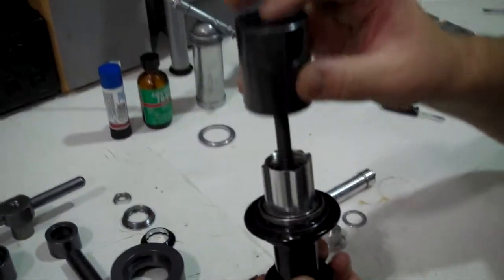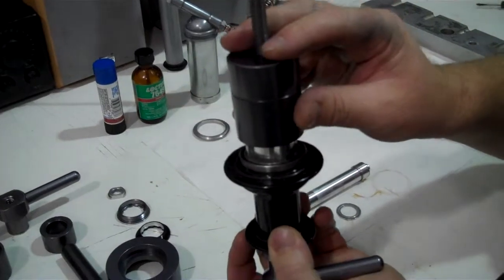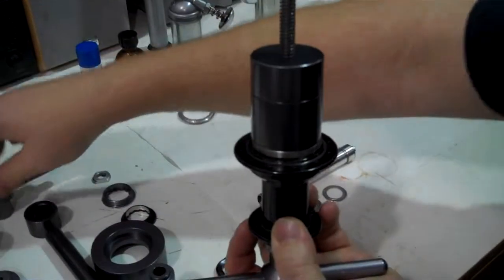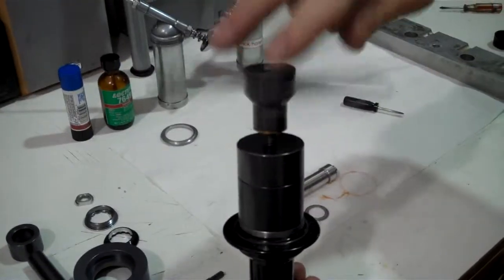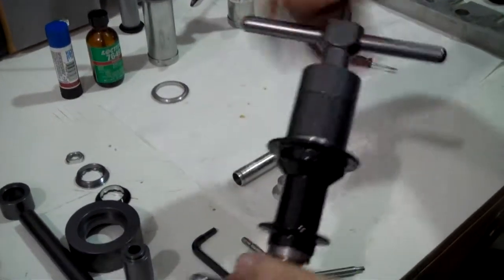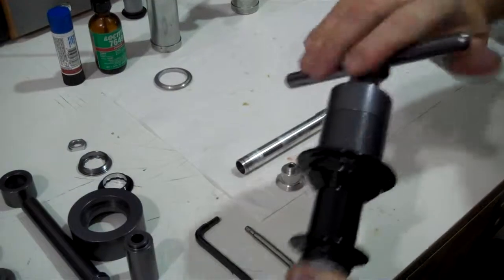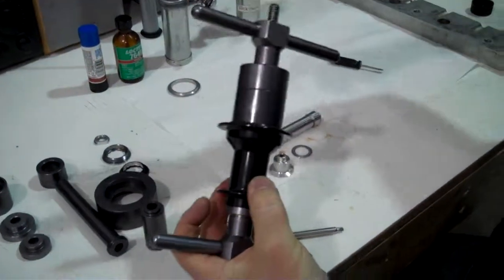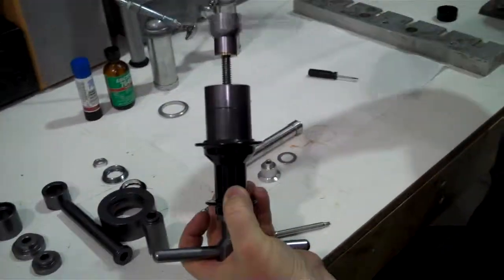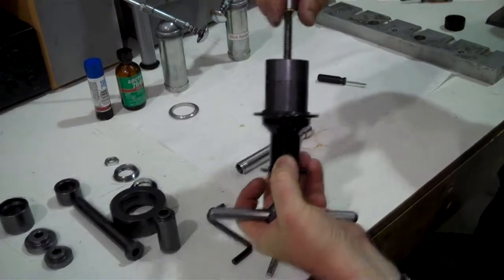And then you take this piece here. This is the bearing cup. It will press that bearing into place. Put the handle on here and just tighten it down and tighten it down until it stops. And again, snug it up nice and tight. You cannot damage the bearing through this process because you're not loading one race relative to the other.